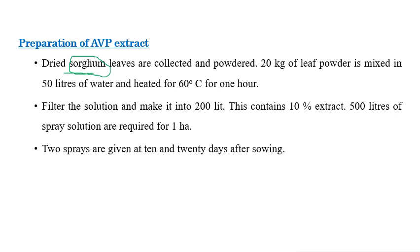The 20 kg of sorghum leaf powder is mixed with 50 liters of water. This mixture is then heated at 60 degrees centigrade for one hour. After that, the solution is filtered and made up to 200 liters total volume.